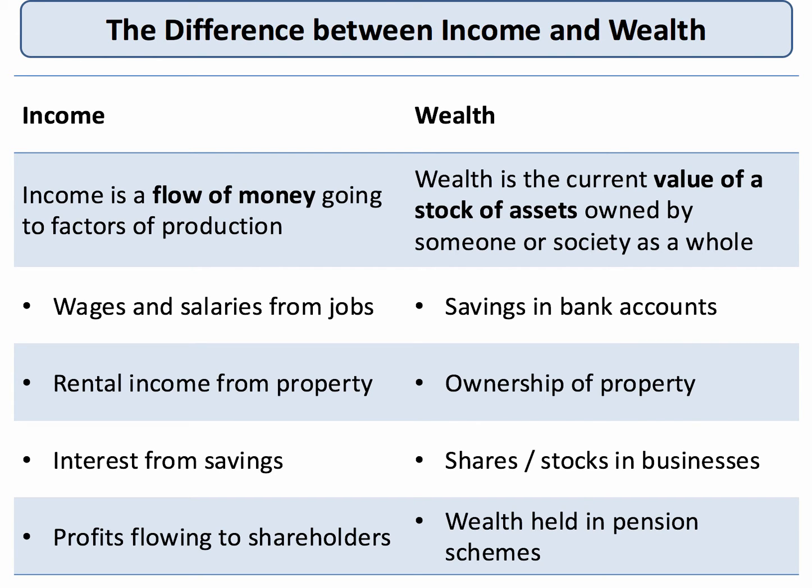The first thing to say is there's an important distinction to make between income and wealth. Income is best defined as a flow of income going to factors of production. For most people, the biggest source of income is the wage or the monthly salary they get from their job. But people can also generate income by owning property, which generates a flow of rental income, savings which provide interest, and if they have shares in a business, they could get dividends, which is the share of the profits. So income is a flow concept.